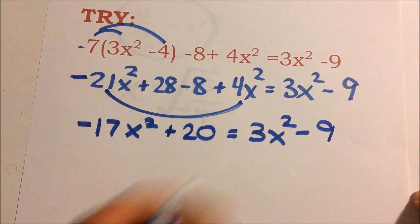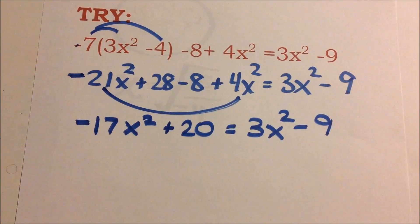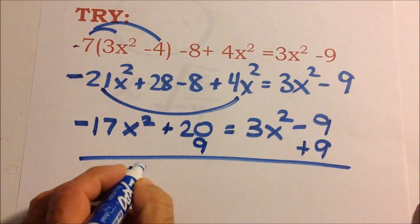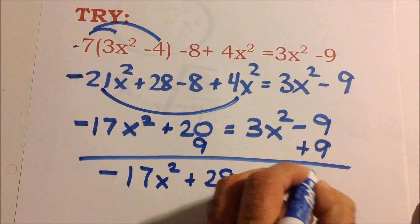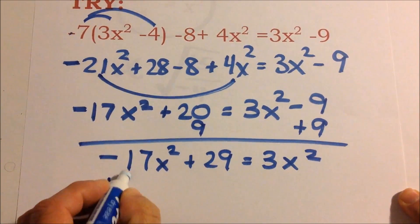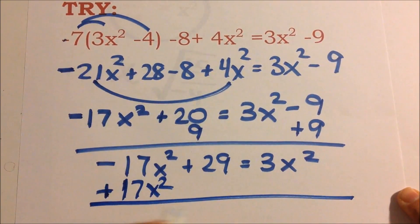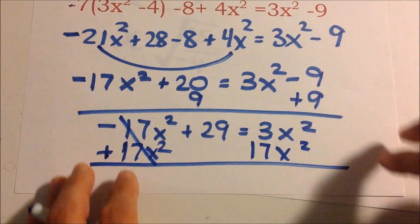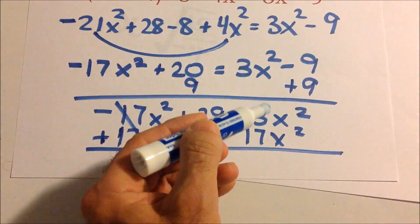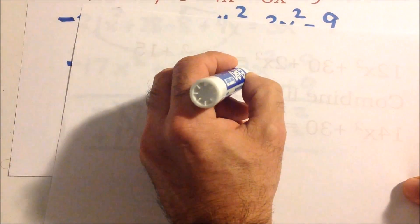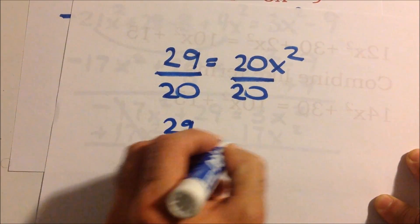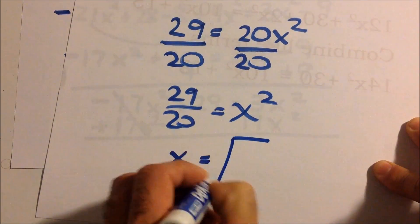Bring everything down. Now subtract constants — add 9 to both sides since we have minus 9, doing the opposite operation. Then eliminate the negative 17x squared by adding it to both sides. We bring down the 29, and 3x squared plus 17x squared gives 20x squared, so 29 equals 20x squared. Divide both sides by 20: x squared equals 29 over 20, and x equals the square root of 29 over 20.